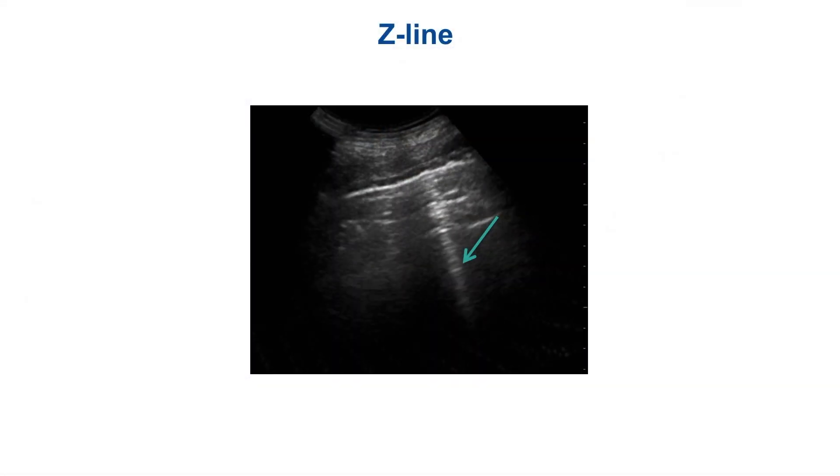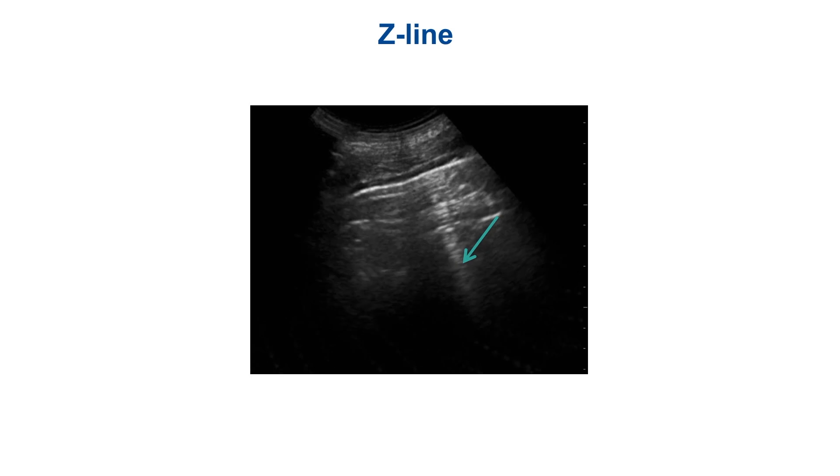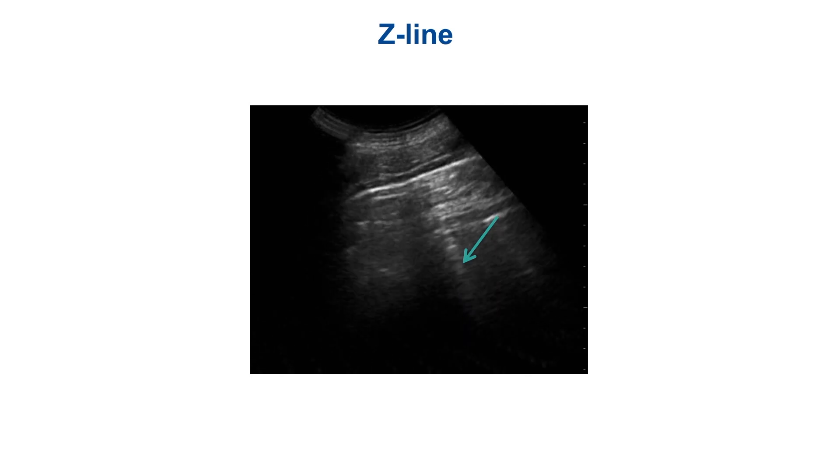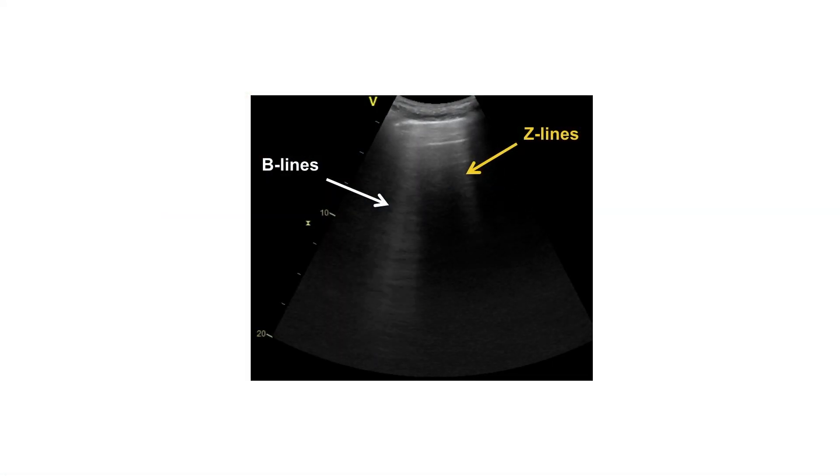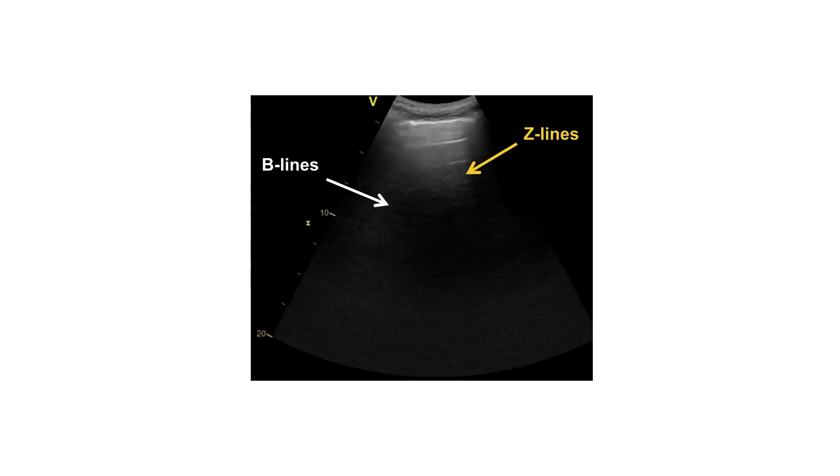No worries, this is simple. Z lines are easy to define because actually they are nothing. Z lines are vertical, hyperechoic artifacts that, similar to B lines, arise from the pleural line. However, they do not fulfill the other B line characteristics. In a few words, Z lines do not reach the bottom of the screen and do not clearly move with lung sliding.